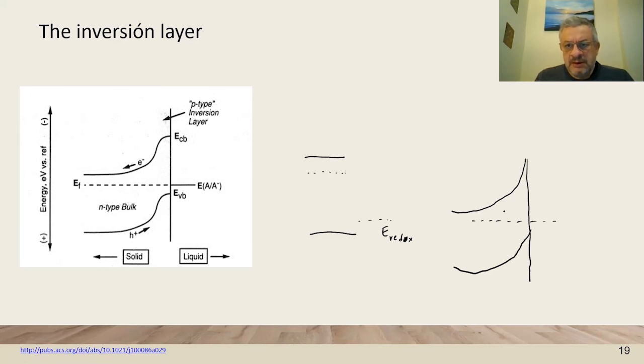This material which is n-type here is in depletion and here is not n-type because the Fermi level is close to the valence band. There is an inversion layer where the type of semiconductor has been inverted at the surface and this can induce the injection of holes better.